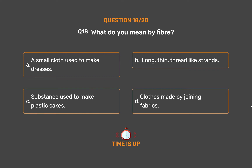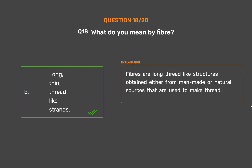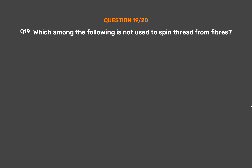The correct answer is Option B, Long, thin, thread-like strands. Fibers are long thread-like structures obtained either from man-made or natural sources that are used to make thread.